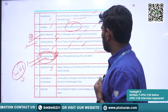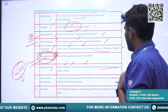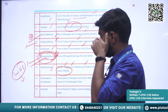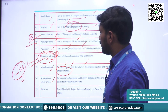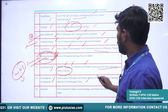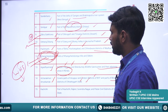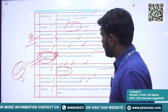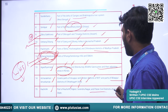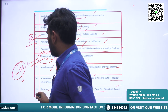Next is Agasthyamalai — districts including Neyyar, Peppara, and Shendurney wildlife sanctuaries and their adjoining areas. Next is Achanakmar-Amarkantak Biosphere Reserve — parts of Anuppur and Dindori districts of Madhya Pradesh and parts of Bilaspur district of Chhattisgarh. Next is Kutch Biosphere Reserve — parts of Kutch, Rajkot, Surendranagar, and Patan civil districts of Gujarat State.